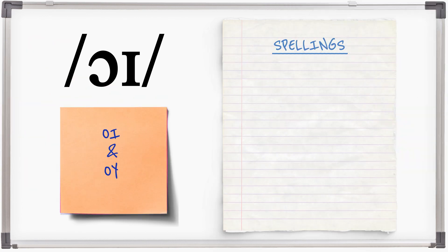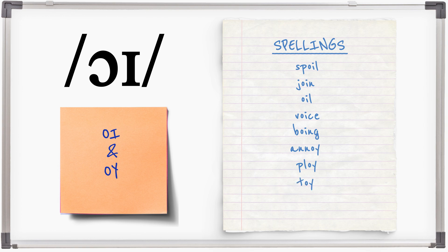OI is spelt with OI and OY: spoil, join, oil, voice, boing, annoy, ploy, toy, boy. A word with the same pronunciation is spelt UO: buoy.